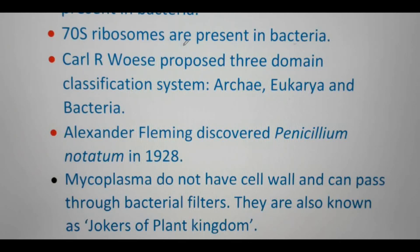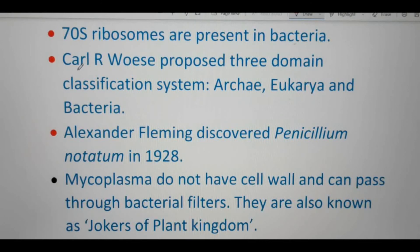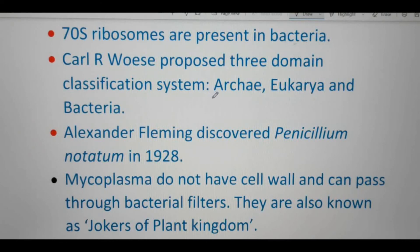Next point: 70S ribosomes are present in bacteria, and eukaryotes have 80S ribosomes. Next point: Karl R. Woese proposed the three-domain classification system — Archaea, Eukarya, and Bacteria. Previously there were only two domains: Eukarya and Bacteria. He observed differences between Bacteria and Archaea, and then proposed the three-domain classification system.